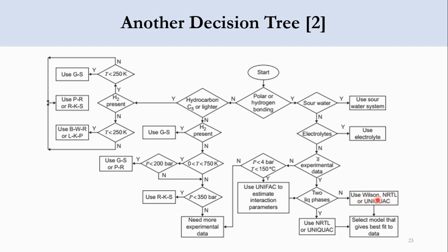If no two liquid phases, use Wilson, NRTL, or UNIQUAC. If yes, use NRTL or UNIQUAC, then select the suitable model that gives the best fit to the data. If experimental data is not available, check whether the pressure is less than 4 bar and temperature is less than 150 degrees centigrade. If yes, use UNIFAC to estimate the binary interaction parameters, then check if two liquid phases are involved.